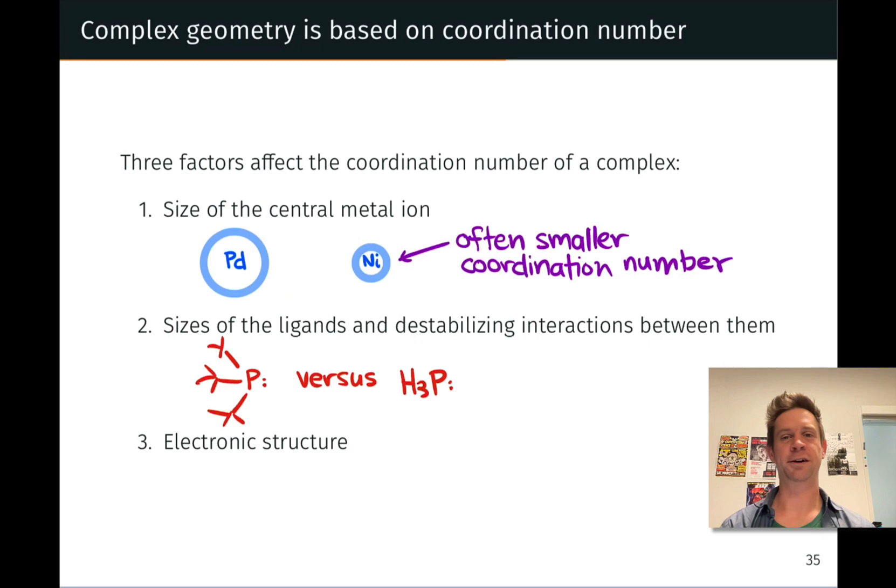These H's are very, very small. This tri-tert-butylphosphine has three groups that are very, very large. These are three carbons, each of which has three methyl groups branching off of it. So this doesn't really do it justice, but this whole collection of atoms is very, very large. And so the coordination number associated with complexes of this larger ligand right here is going to be generally smaller than the coordination number of complexes involving this smaller phosphine ligand because it takes up less space, so we can fit more of them around a given metal center.